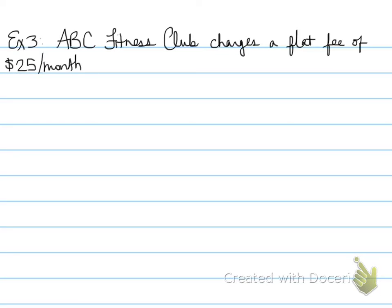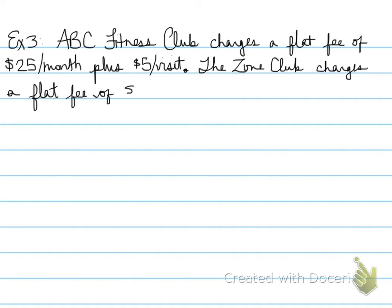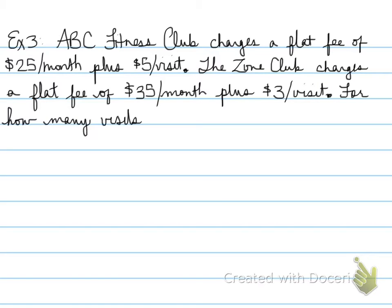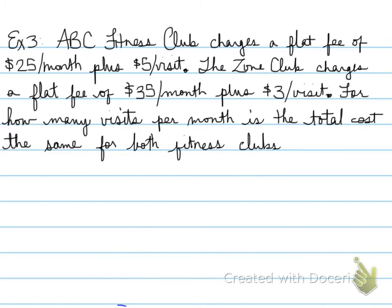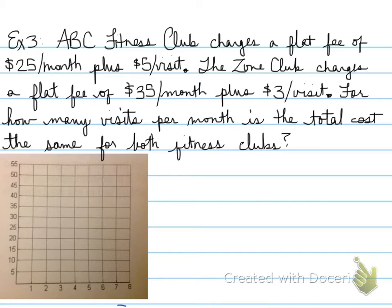All right, looking at example number three. ABC Fitness Club charges a flat fee of $25 per month plus $5 per visit. The Zone Club charges a flat fee of $35 per month plus $3 per visit. For how many visits per month is the total cost the same for both fitness clubs?